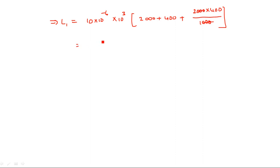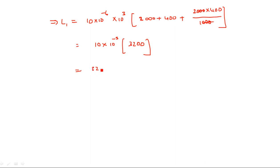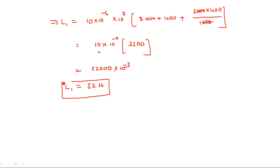After simplification: L1 = 32000 × 10⁻³ = 32 H. So L1 = 32 H. It is very simple — just substitute the notation and values, that's it.